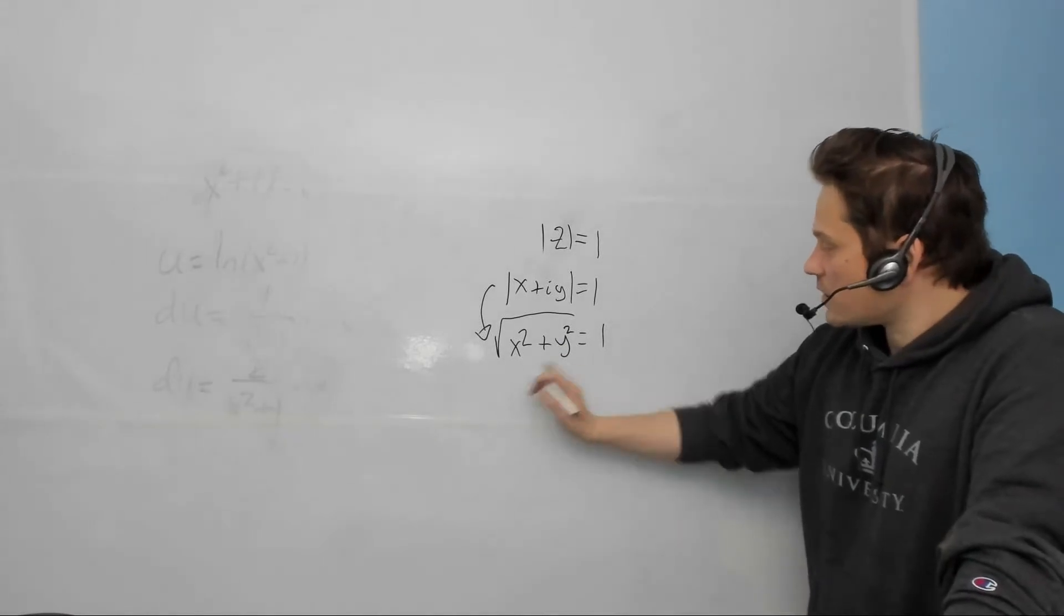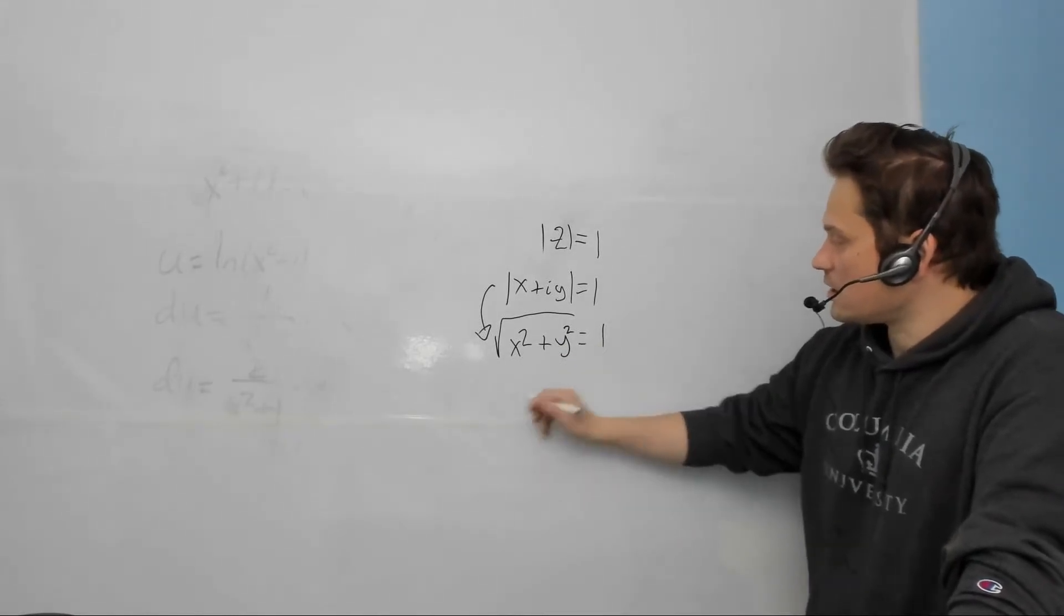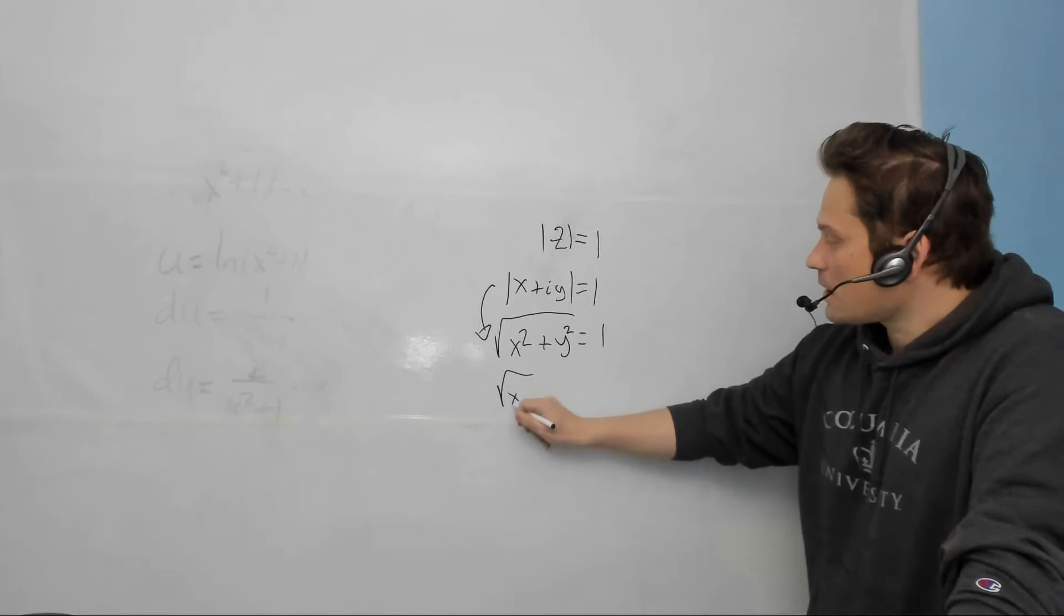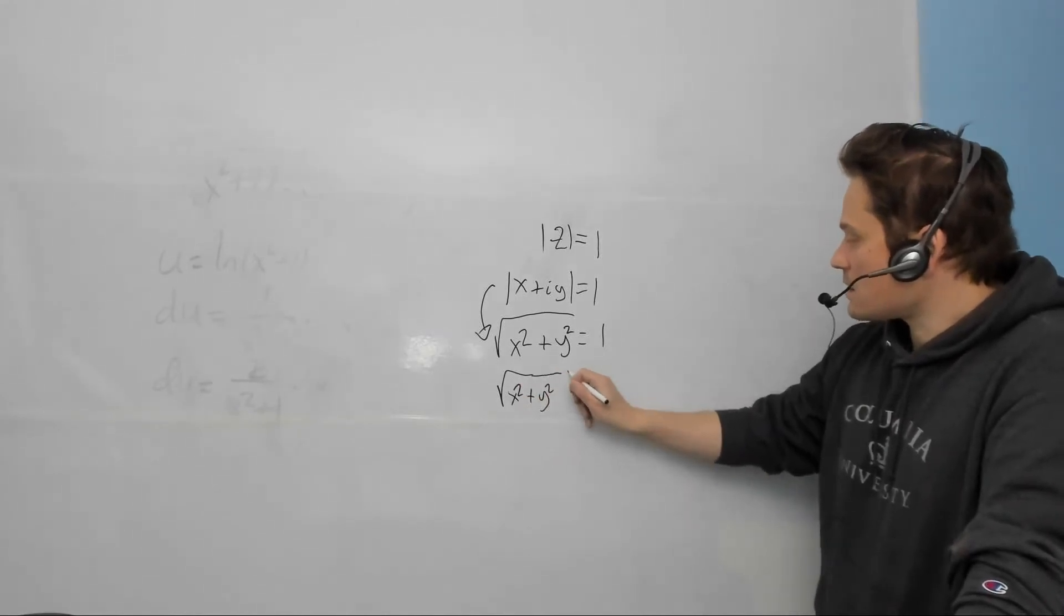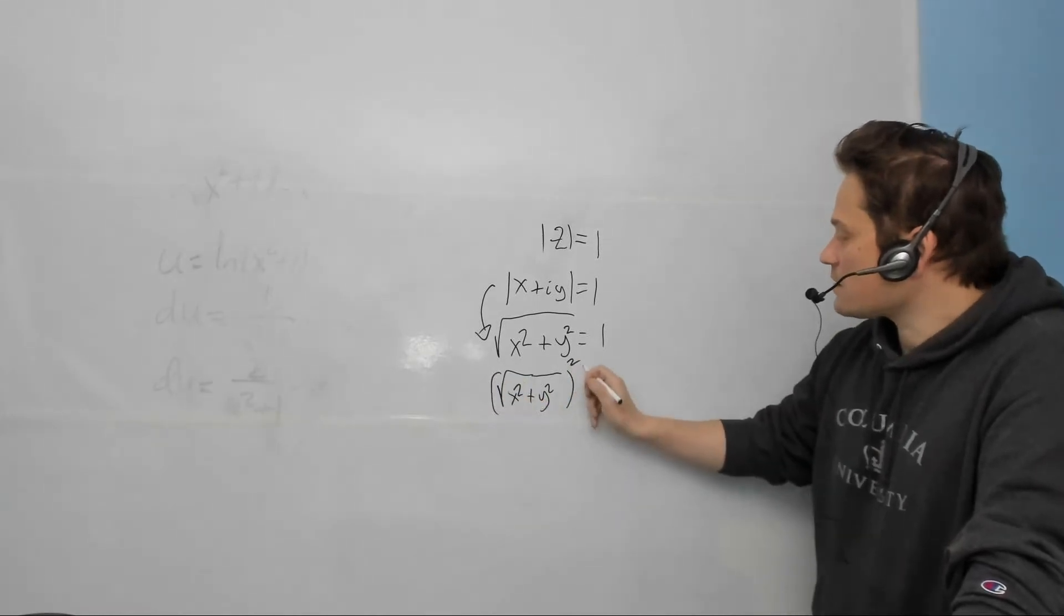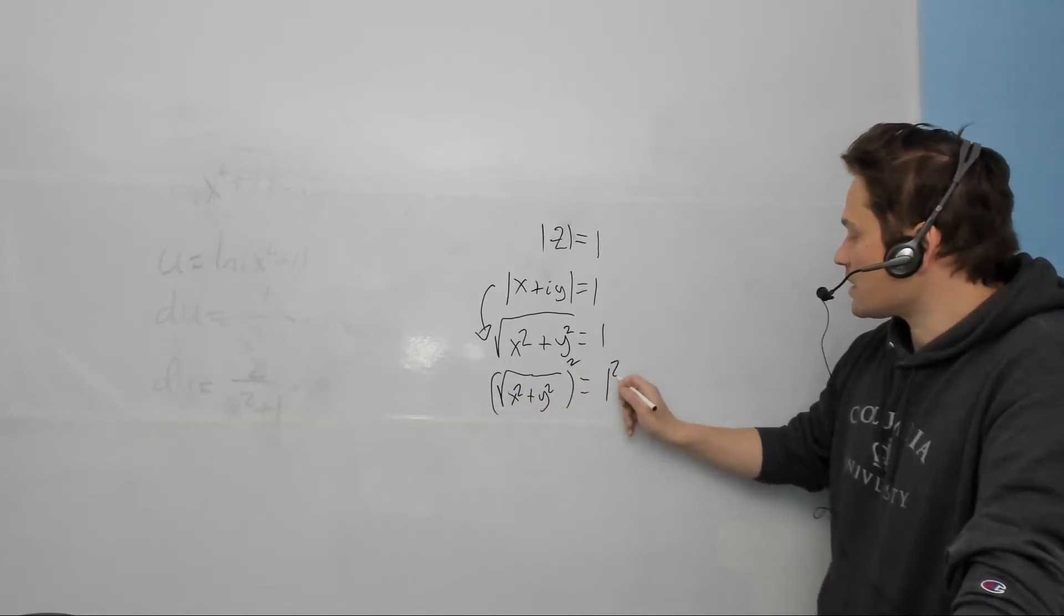Then after that, you can square both sides. So in other words, you can do this. You're going to do x squared plus y squared here. Okay, and square both sides this way. And also square the right side naturally enough, so it becomes this.